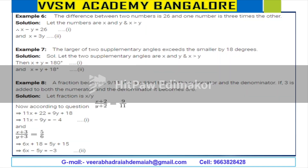These are important sums. The difference between two numbers is 26, and one number is three times the other. Let the numbers be x and y. Then x minus y is equal to 26, and x is equal to 3y. Please try the remaining sums at home.